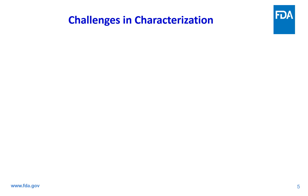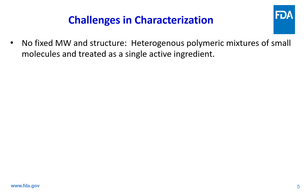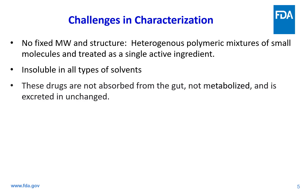As discussed in previous slides, these molecules have complex chemical structures and show the following properties. Each particle is considered as one molecule, and molecular weight depends on particle size, so there is no fixed molecular weight for these molecules; however, a molecular formula can be derived. The API contains heterogeneous complex mixtures of small molecules and is treated as a single active ingredient. In general, cross-coupled polymers are not soluble in any solvent. These drugs are not absorbed — the activity of these drugs is scavenging, and the intended activity happens in the gastrointestinal tract.